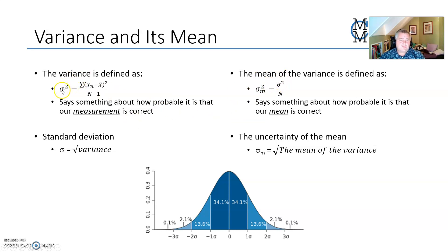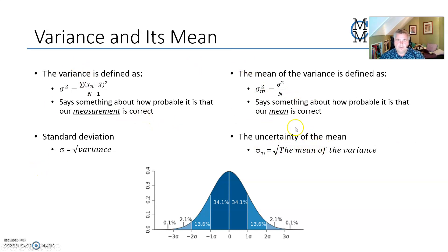The variance is the standard deviation squared, and it says something about how probable it is that our measurement is correct. The standard deviation is the square root of the variance. The mean of the variance is defined as the variance divided by the number of measurements, and that tells us how probable it is that our mean is correct. The uncertainty of the mean is the square root of that. So these are four key numbers used in such statistics.